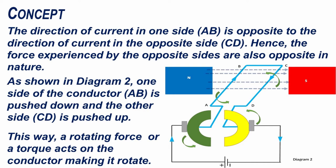Hence, the force experienced by the opposite sides of the conductor are also opposite in nature. As shown in diagram 2, one side of the conductor, AB, is pushed down and the other side of the conductor, CD, is pushed up. This way, a rotating force or a torque acts on the conductor, making it rotate.